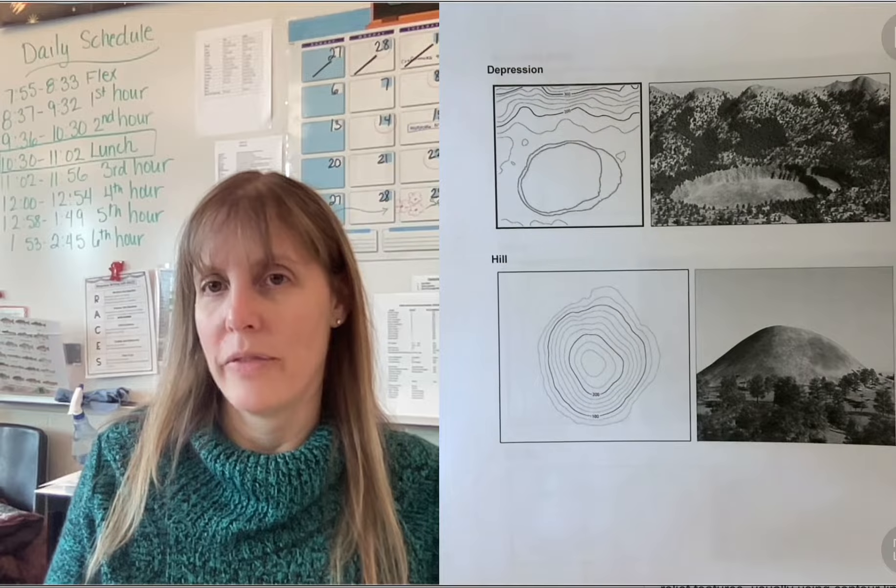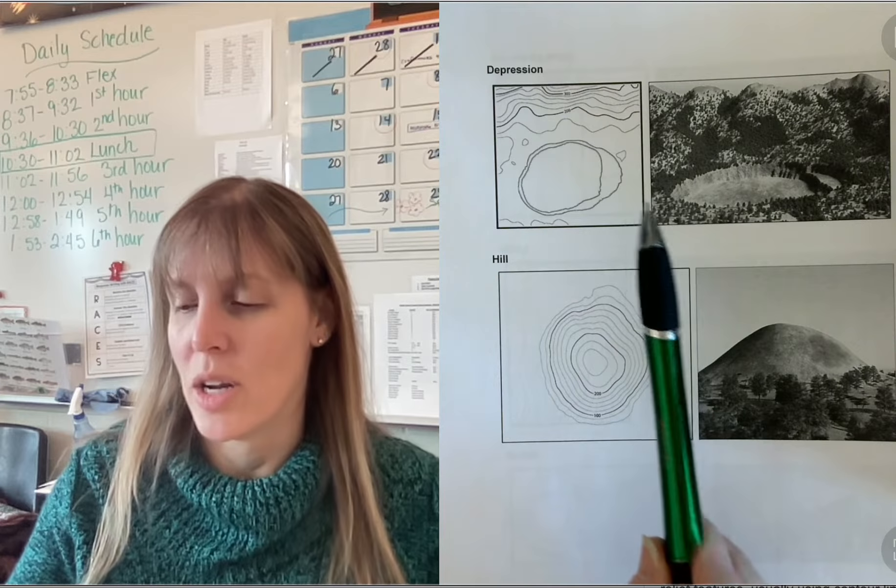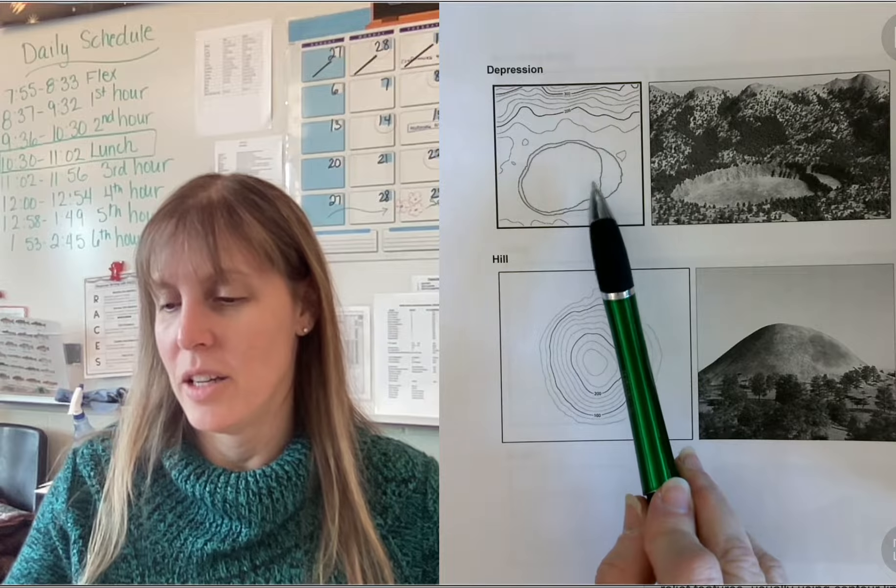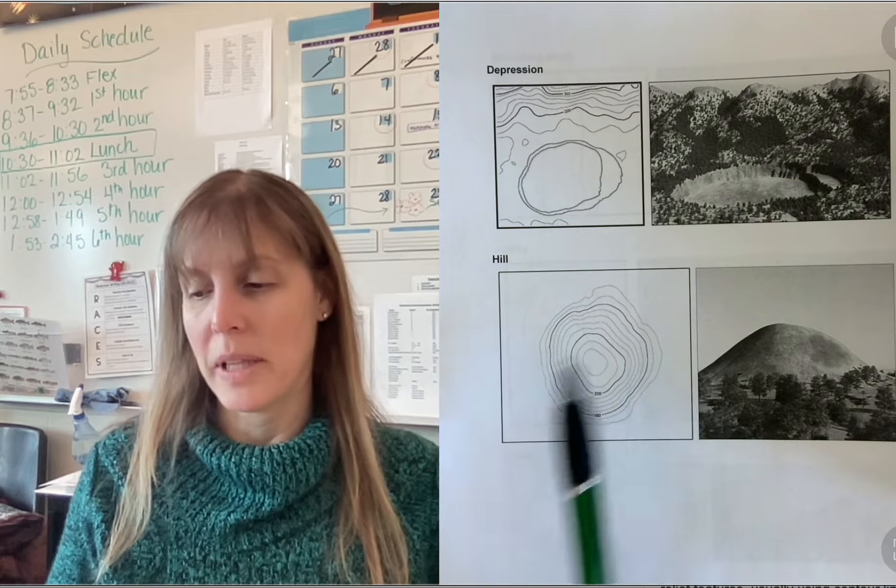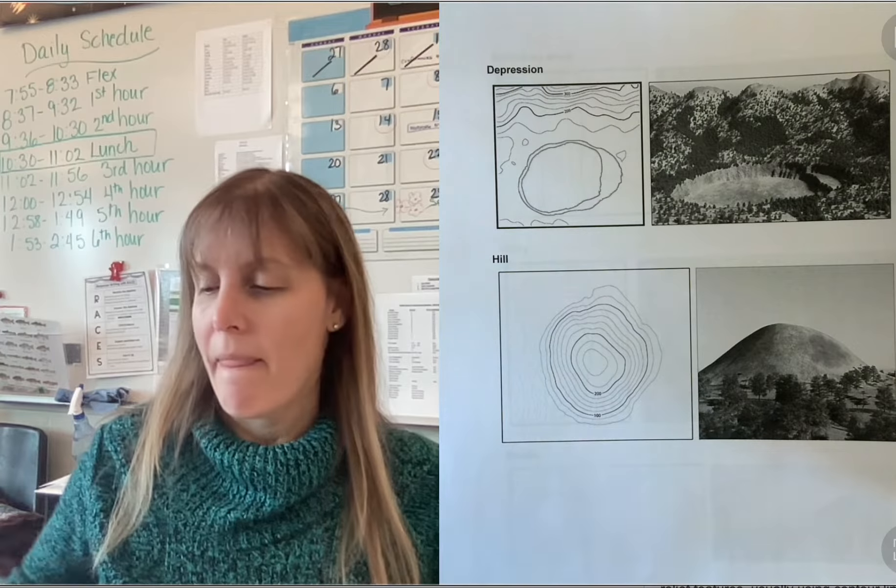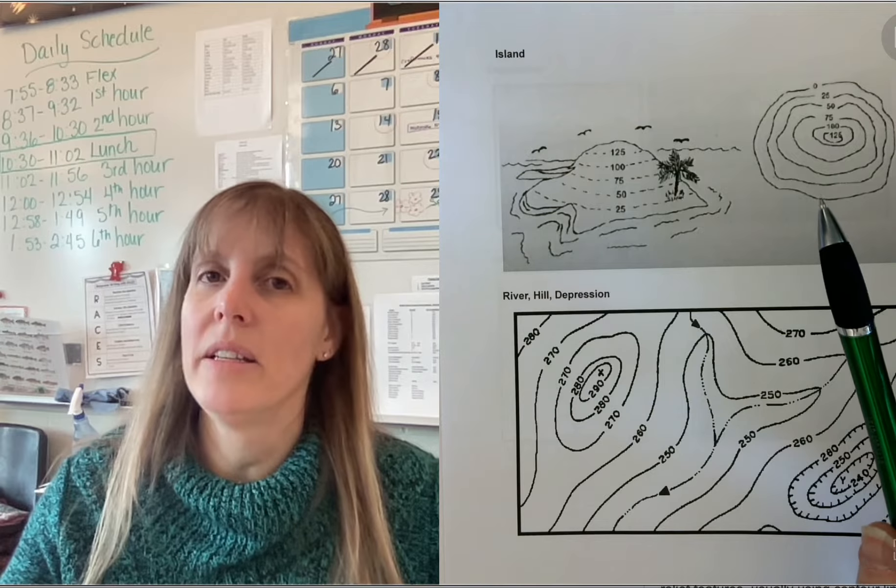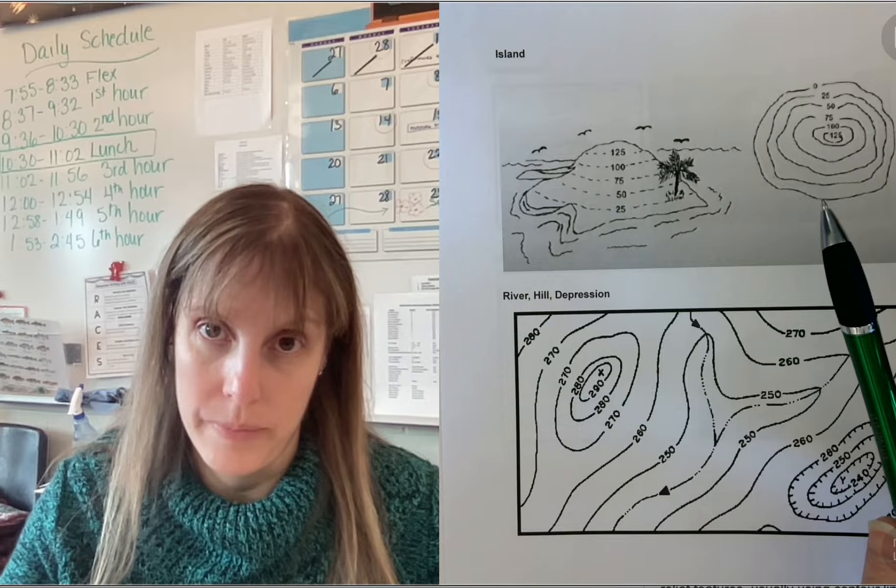The depression is actually kind of fun. Not like you're so depressed, but like it's a depression. So here's like a crater and you count the lines for contour lines. Or you could do a hill, just a plain simple hill. Or you could do an island. So the island is probably the least amount of work. Okay?